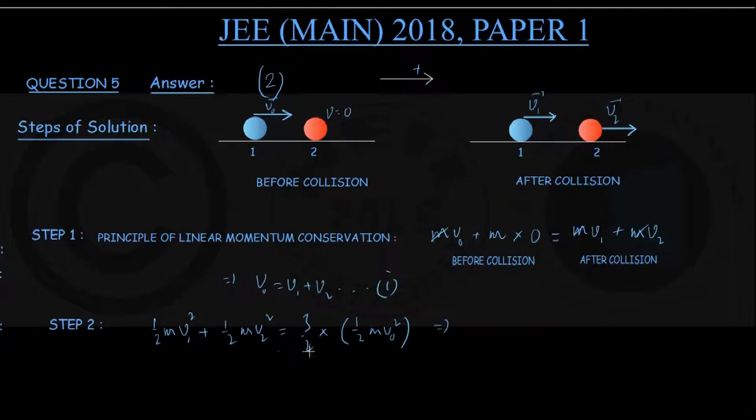From here, let us get rid of these halves and m. After cancelling, we have v1 squared plus v2 squared equals 3 by 2 v0 squared. That is my equation number 2.